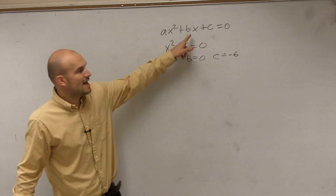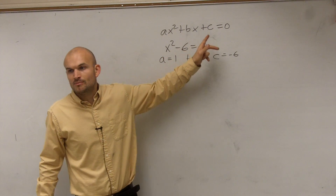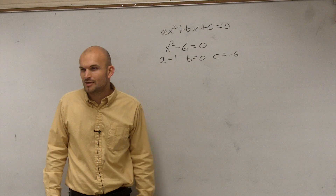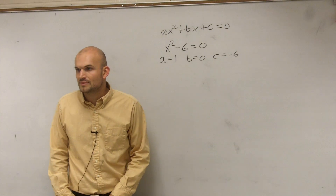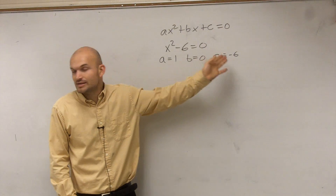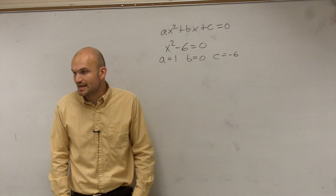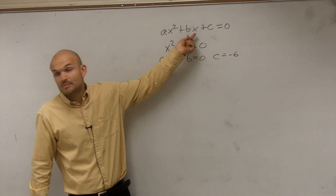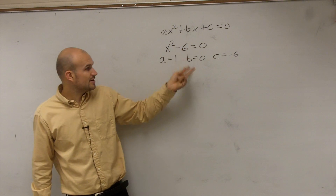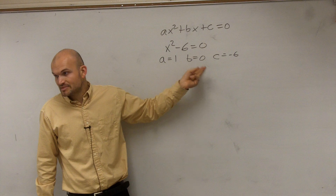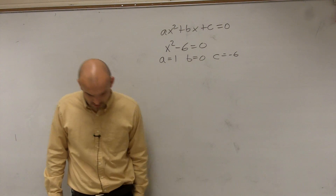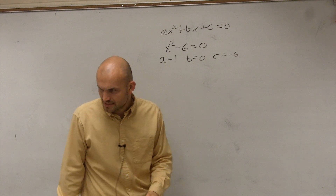Since I don't have an x term, I know that its coefficient is 0. So now I know that my a is 1, my b is 0, and my c is negative 6. I don't have a middle term — there's only two terms. Therefore b has to be 0, because 0 times x would be 0.